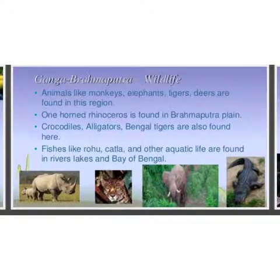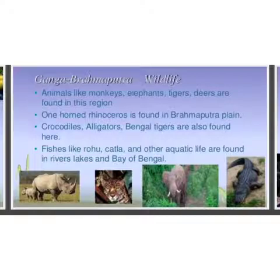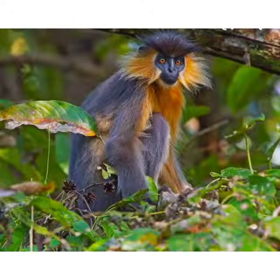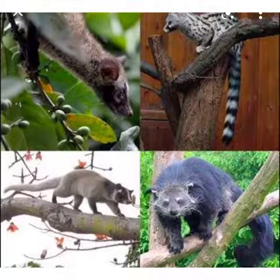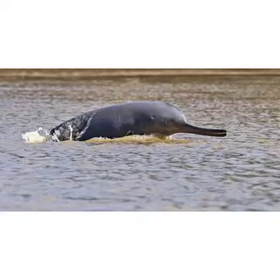Ganga-Brahmaputra wildlife. Animals like monkeys, elephants, tigers, and deer are found in this region. The one-horned rhinoceros is found in the Brahmaputra Plain. Crocodiles and Bengal tigers are also found here. Fish like rohu, katla, and other aquatic life are found in rivers, lakes, and the Bay of Bengal. Asian elephant, Gangetic dolphin, and golden langur are the main animals that live in the Assam plains.